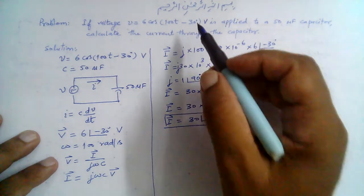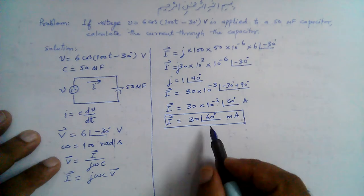So this is the phasor current, but the voltage was provided in the time domain, so we need to transform this result to the time domain.